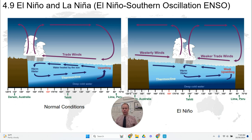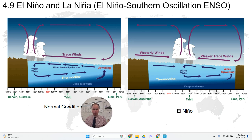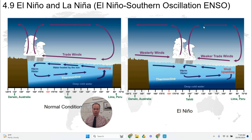When an El Niño event takes place, these trade winds weaken and this process shifts. In a strong El Niño year, the trade winds can even completely reverse. We have less water being blown toward Australia and less upwelling. The convection current is disrupted, and the area of higher precipitation shifts, eventually moving all the way over to South America. That's an El Niño Southern Oscillation.